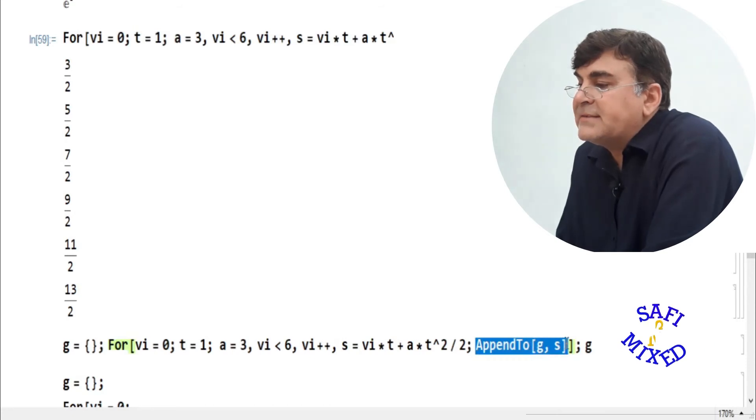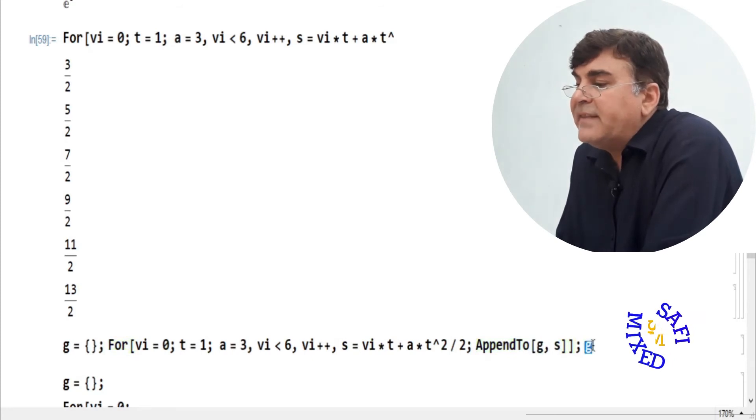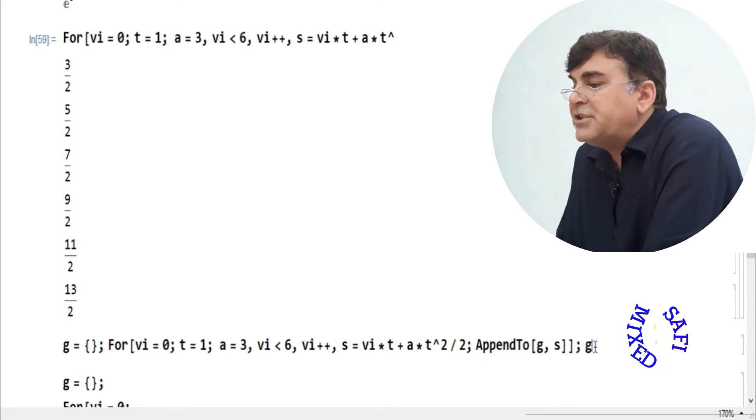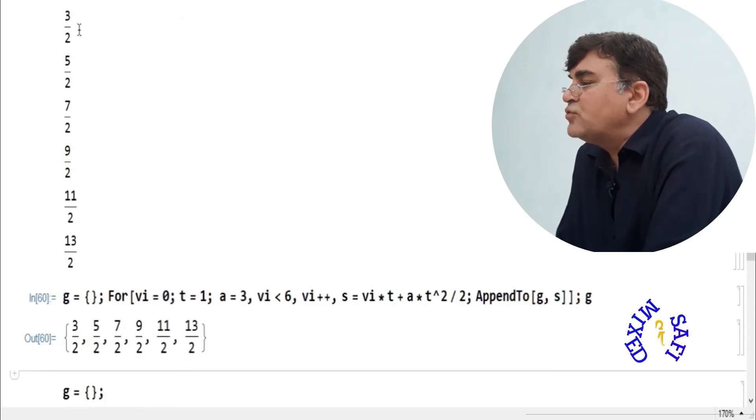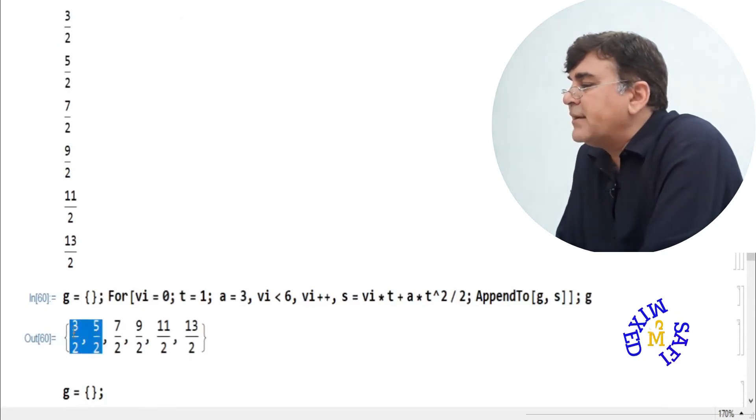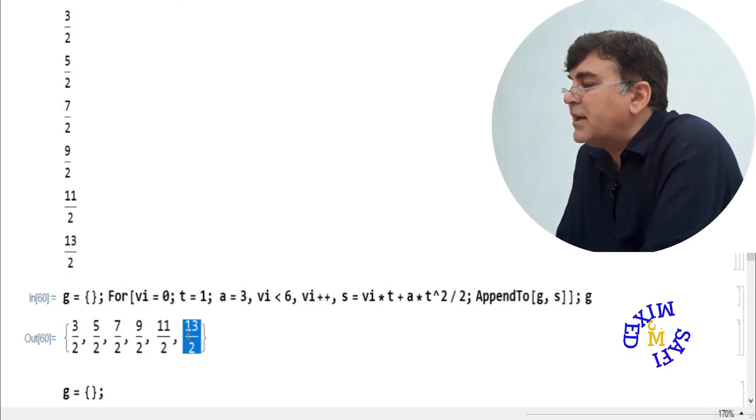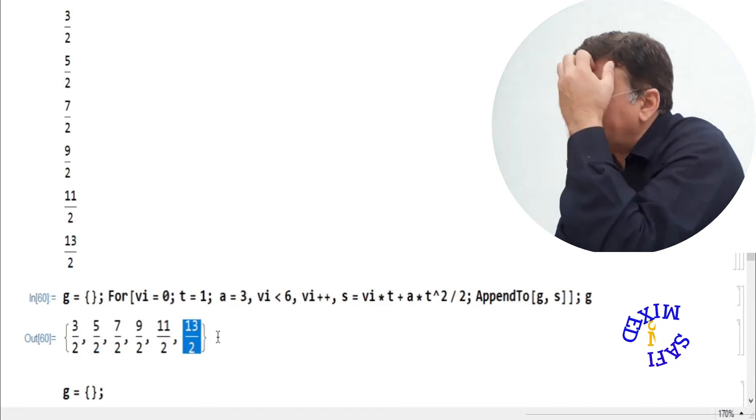If I run this part, I ask Mathematica to append the values of S to the list G, and then at this part I ask Mathematica to show the values of G. If I run this loop, I get all those values which are given: 3 by 2, 5 by 2, and so on, here in the form of a list. The last value, 13 by 2, here I have as the last value of this list.